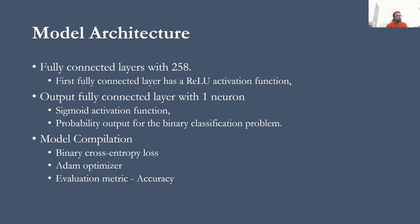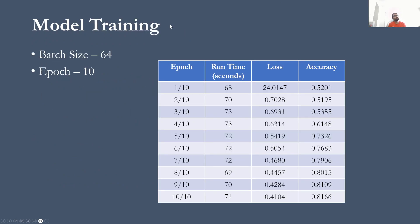And to perform the model compilation, I used binary cross-entropy loss, Adam optimizer, and I used accuracy as the evaluation metrics. And by doing this, I was able to train the model by using the 14,000 images that I have.